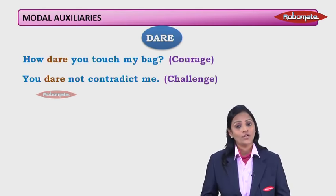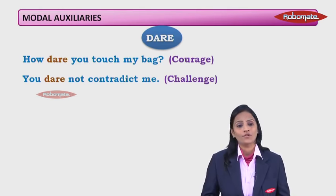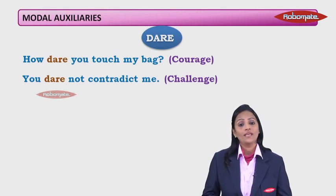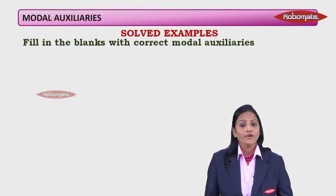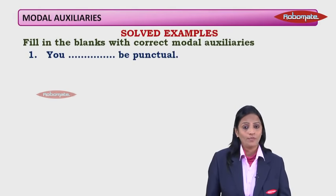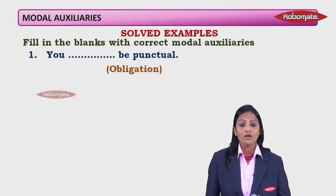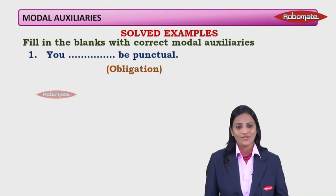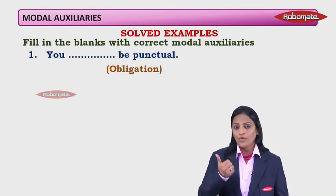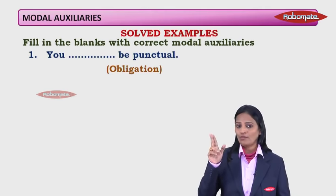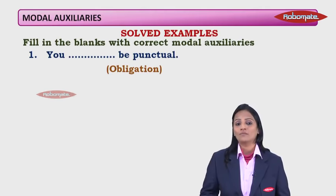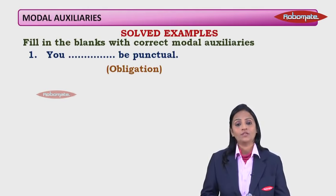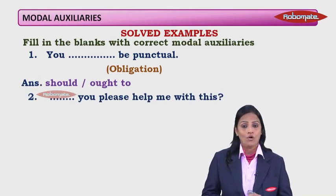Now let's move on to the exercise: fill in the blanks with the correct modal auxiliaries. 'You dash be punctual' — showing obligation. Remember there are three options — should, ought to, and must — but avoid 'must' for obligation; use it only for compulsion and guess. Keep obligation as 'should' or 'ought to'.